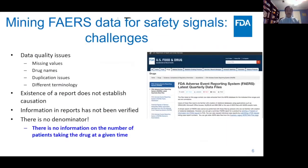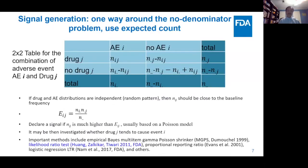Analyzing FAERS data is not without challenges. First, there are data quality issues like missing values, drug name duplication, and terminology problems. The data by itself does not establish causation. From a statistical point of view, a big problem is there is really no denominator. In the database, you can find out that maybe a thousand patients got sick when taking drug A, but there's no way to know how many people are taking that drug at that time. Most statistical methods therefore cannot be used directly. Fortunately, many researchers have been working on this problem and have smart ideas to get around the denominator problem.